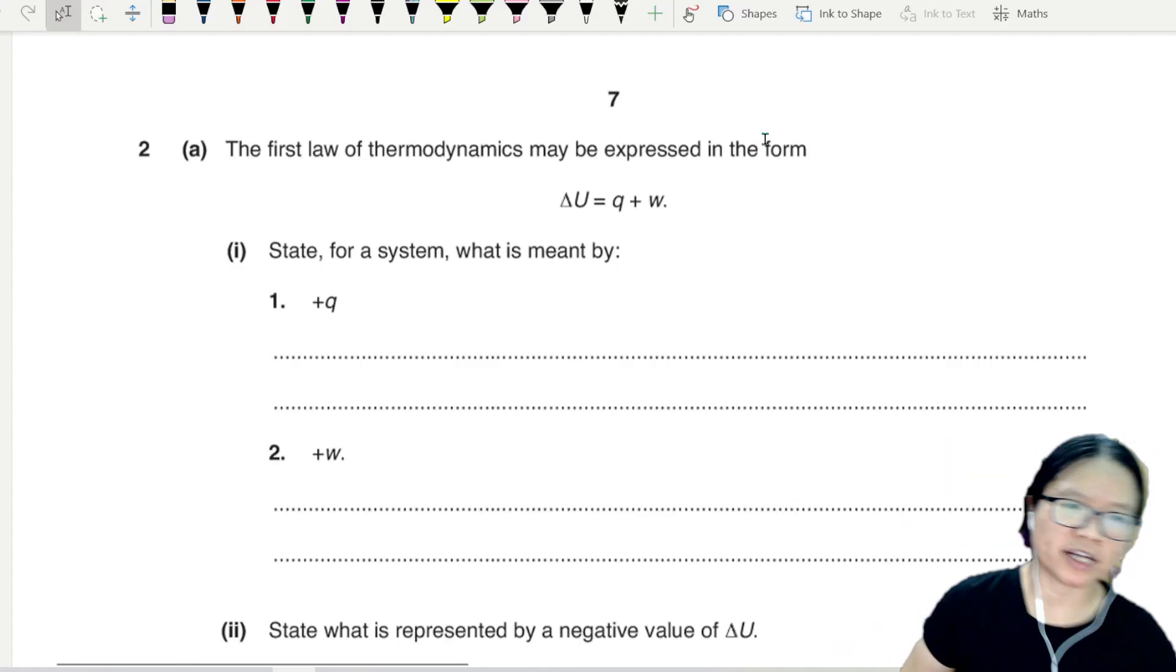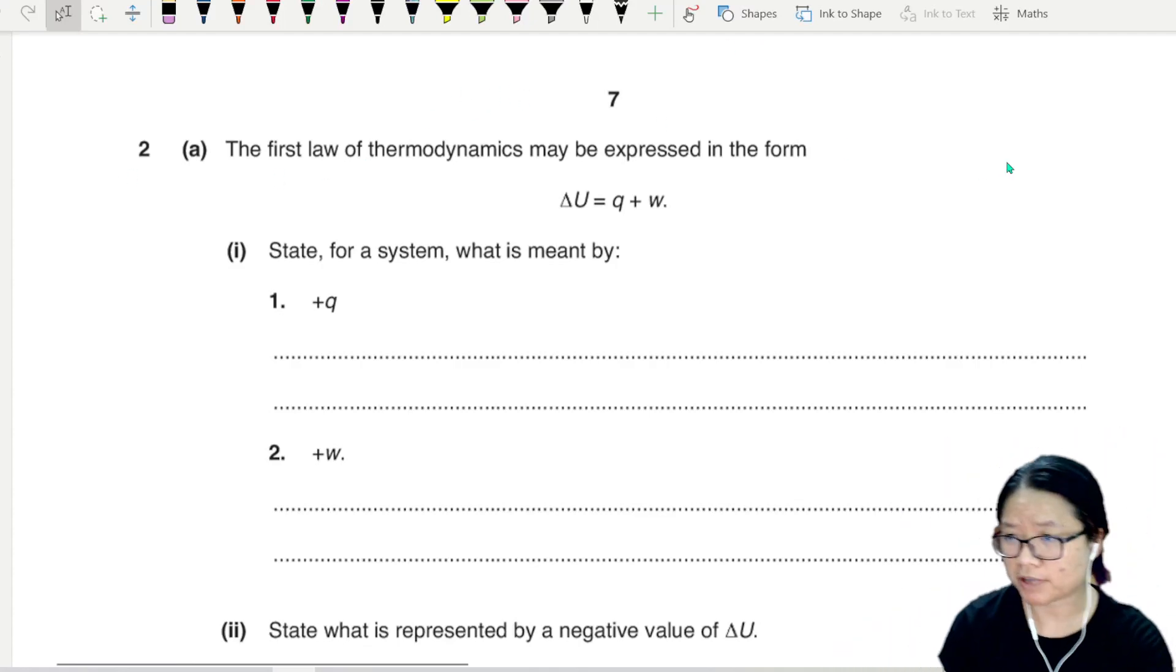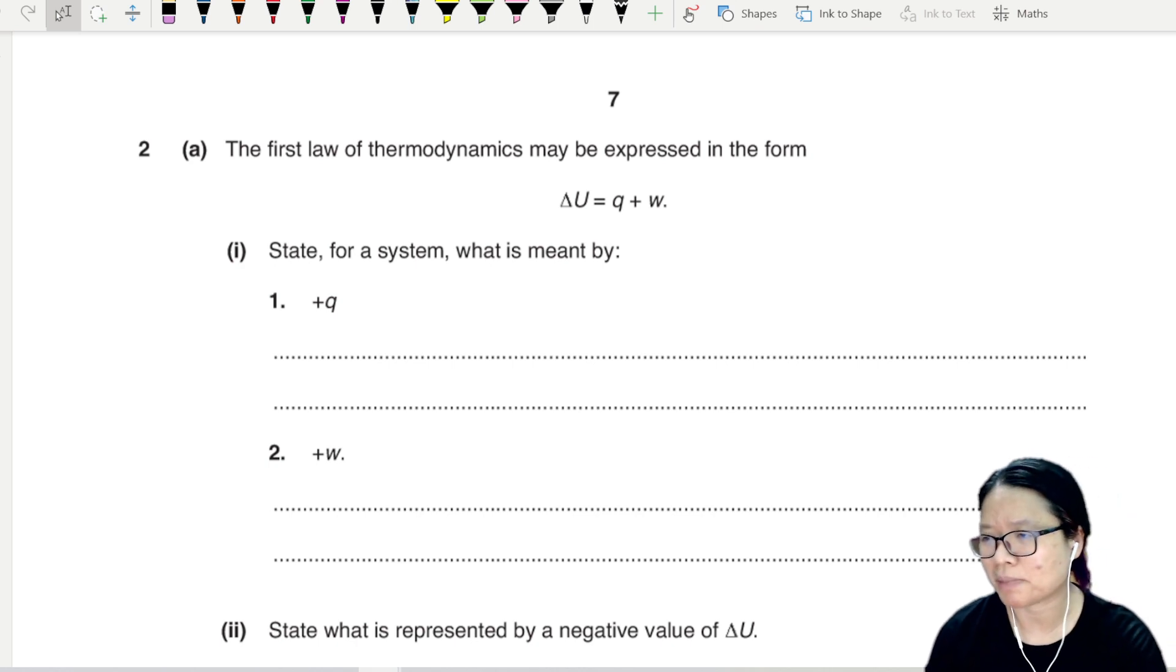The first law of thermodynamics can be expressed in the form delta U equals q plus w. This kind of question is very important to define carefully and be very aware or sensitive about the plus minus sign.